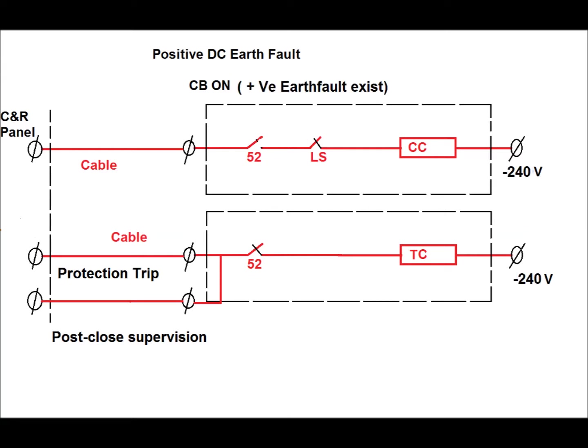We have already seen that a positive earth fault occurs due to the indication circuit. Due to this, the negative to earth voltage will arise — that is, it will come to minus 240 volt — and this voltage will be on one terminal of the closing coil and trip coil as shown in this diagram.